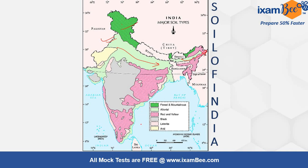Red and yellow soils are found mainly in Chhattisgarh, Orissa, and the southern regions of Karnataka and Tamil Nadu, where red soil is dominant. Black soil is mainly found in the Maharashtra Deccan Trap region, Madhya Pradesh, and some regions of Andhra Pradesh and Karnataka. Laterite soil covers the hills of Kerala and minor regions of West Bengal and some northeastern states.